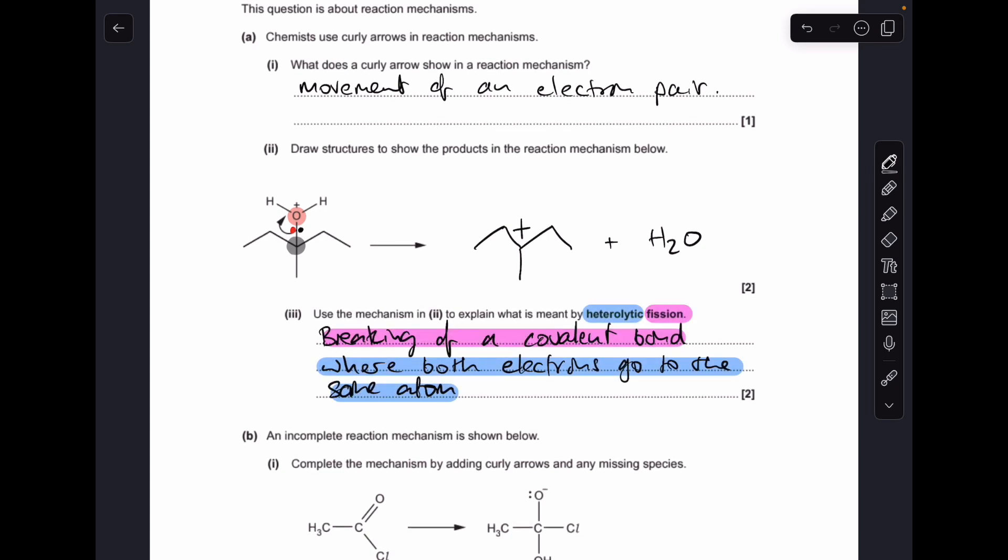So moving on to the explanation for heterolytic fission, you can see I've color-coded my answer. There's two parts of the answer. We'll start with fission. Fission is the breaking of a covalent bond. And the heterolytic part is the fact that both electrons have gone to the same atom. So in the case of the mechanism above, the pair of electrons has gone to the oxygen. That's why it's heterolytic fission.